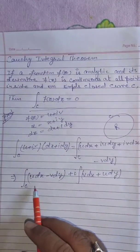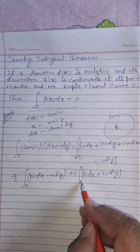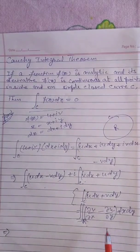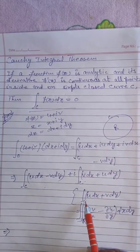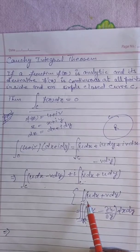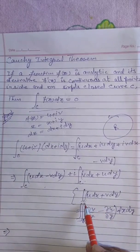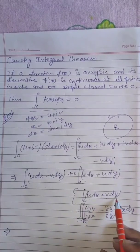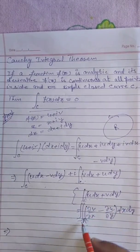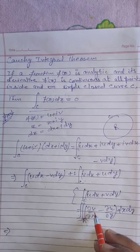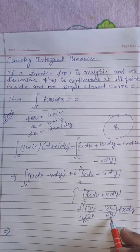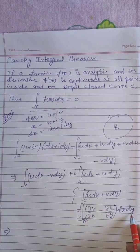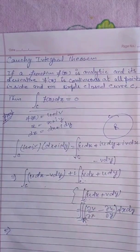Now we use Green's theorem, which is also used for closed curve c and region r. u dx plus v dy equals double integration over region of ∂v/∂x minus ∂u/∂y dx dy. So here we use it.